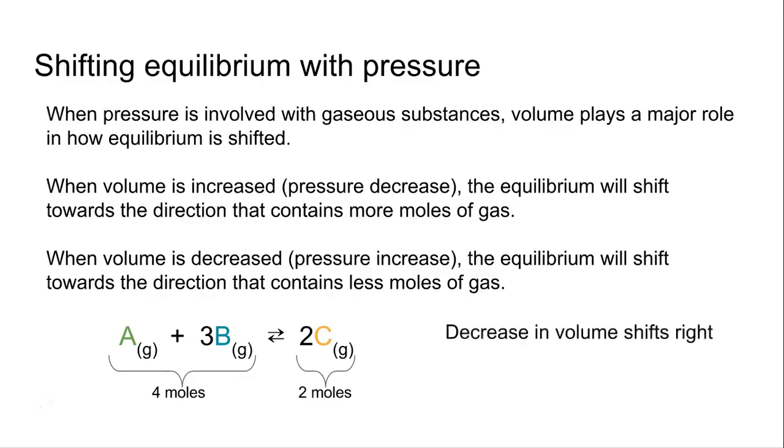So imagine if I had a decrease in volume, it would favor the products. So it would shift right. Why does it favor the products? Because there's less moles over there. A decrease in volume sure would like less moles of a gas in it. So it'll shift that thing to the right. We'll get more C produced and less A and B found at equilibrium.